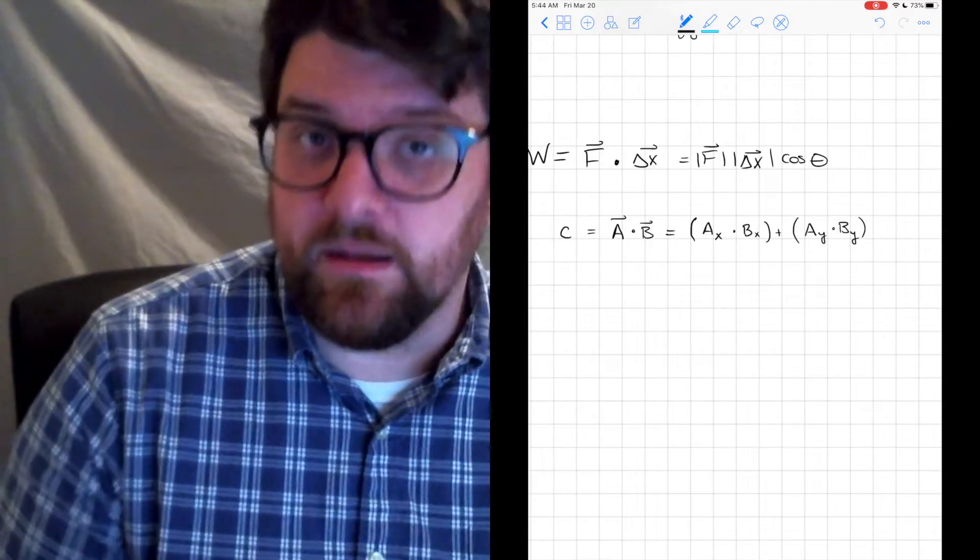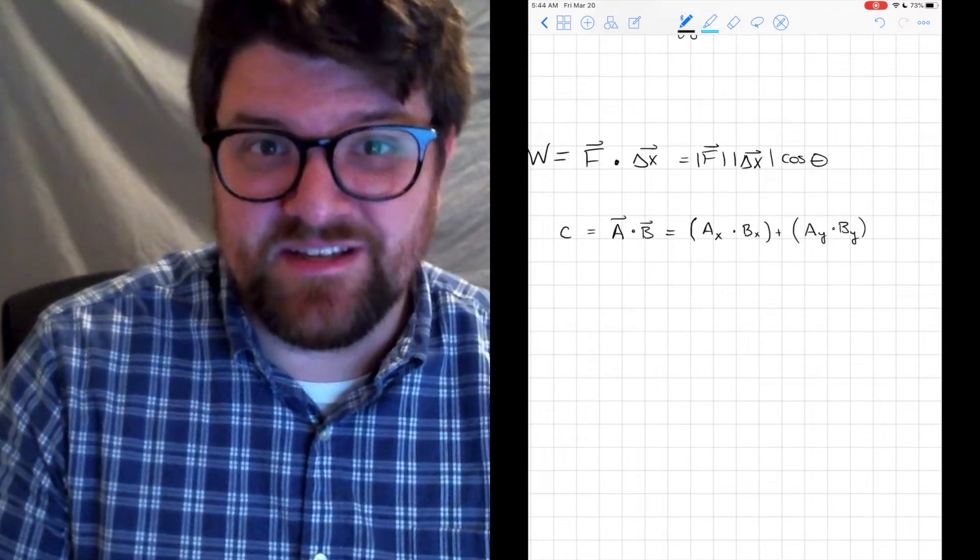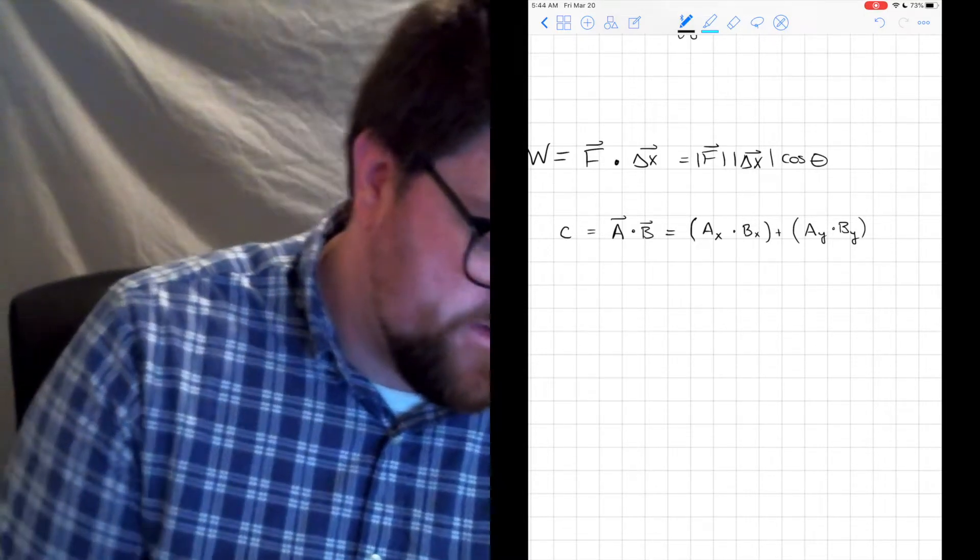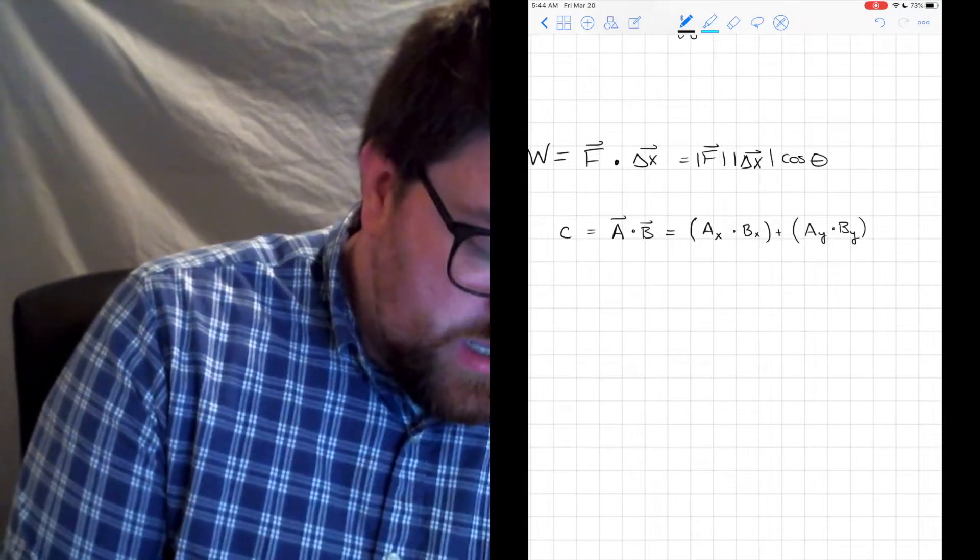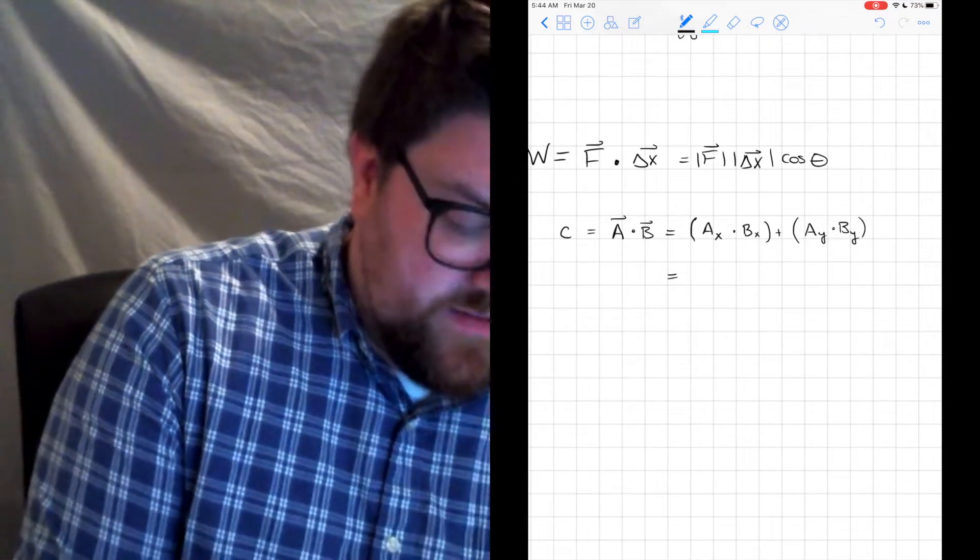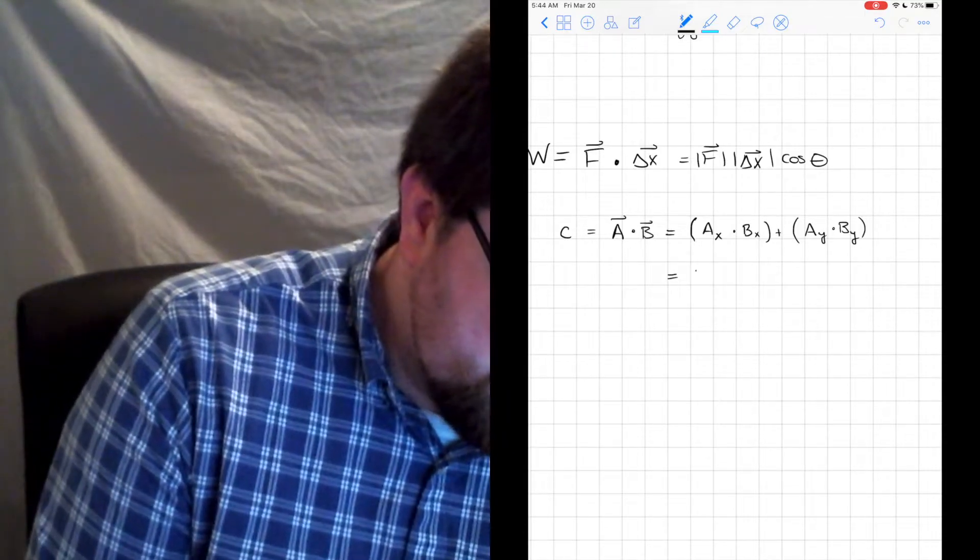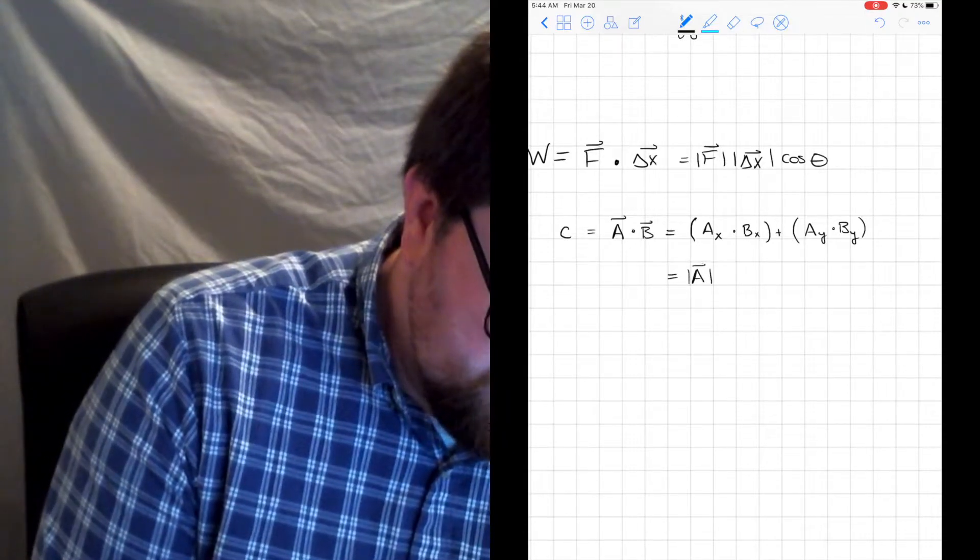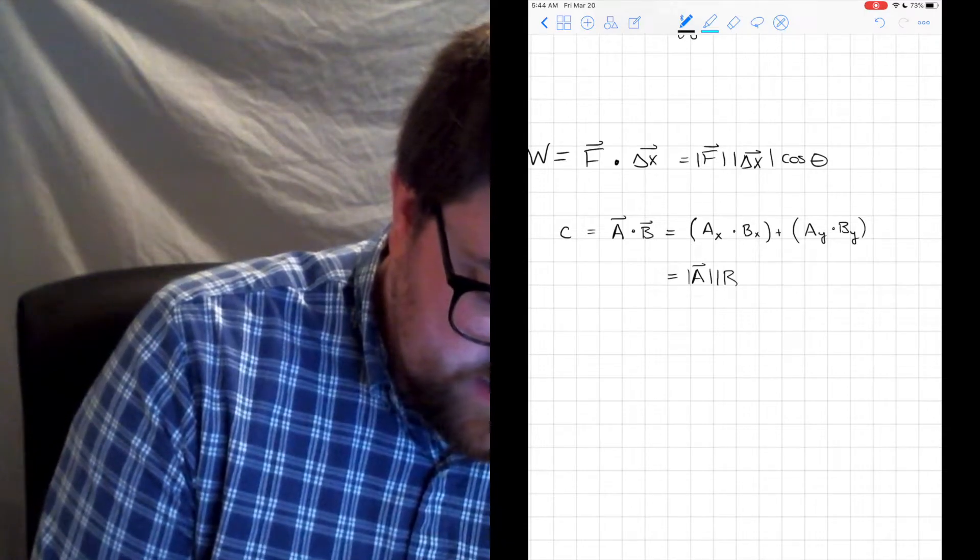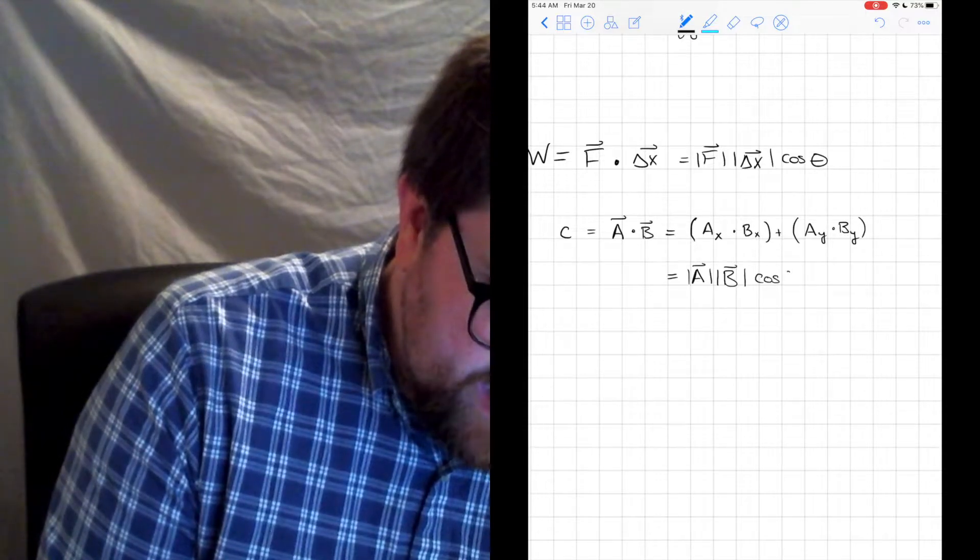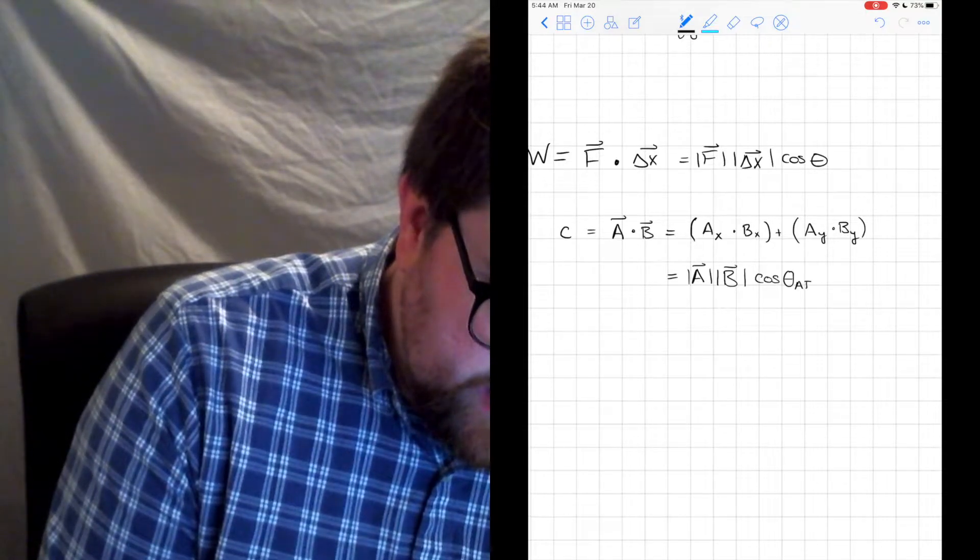It's just a number. And that makes sense, because work, energy, are just numbers. They're scalars. So we said in the last video that we can also simplify this, right? If we know some geometric information about this, as the magnitude of a times the magnitude of b times cosine of the angle between a and b.